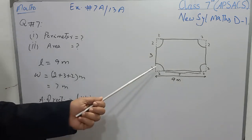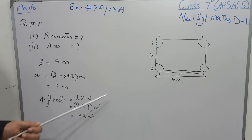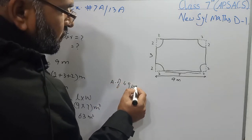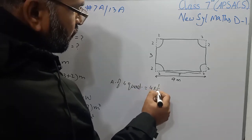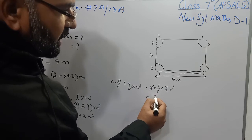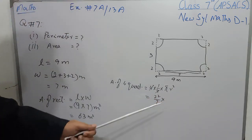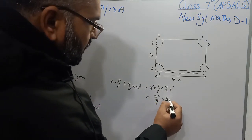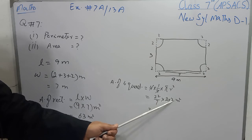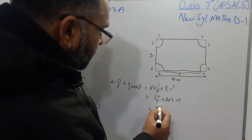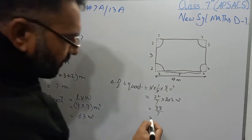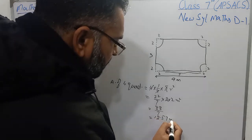Now I will find the area of the 4 quadrants, which will then be subtracted from 63 to get the area of the figure. Area of 4 quadrants equals 4 multiplied by 1 over 4 multiplied by πr². The 4s cancel, leaving 22 over 7 multiplied by 2 multiplied by 2, giving 88 over 7, which equals 12.57 meter square.